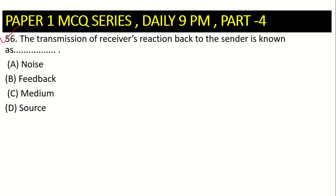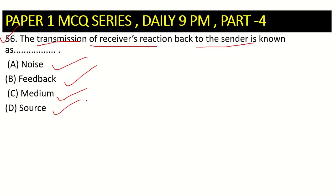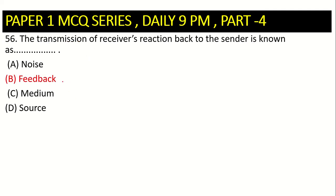Next, question number 56: the transmission of the receiver's reaction back to the sender is known as noise, feedback, medium, or source. The receiver's reaction — either positive or negative — sent back to the sender is feedback. So option number B is the correct answer.